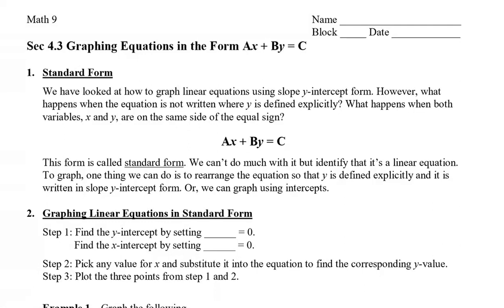Now, we have already looked at how to graph linear equations using slope-y intercept form. However, what happens when the equation is not written where y is defined explicitly, meaning the y is isolated? What happens when both variables, the x and the y, are on the same side of the equal sign, such as this? This form is called standard form, where ax plus by is on the same side, and then it equals another constant number.